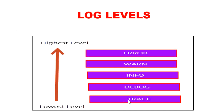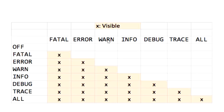The log levels from lowest to highest are: TRACE, DEBUG, INFO, WARN, and ERROR. If we have enabled log level as INFO, then the log messages printed on console will be INFO, WARN, and ERROR — these three will be enabled. If log level is DEBUG, then DEBUG, INFO, WARN, ERROR, and FATAL messages will all be printed on the console. This is the visibility graph of log levels.